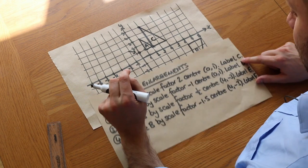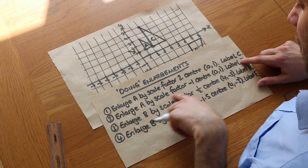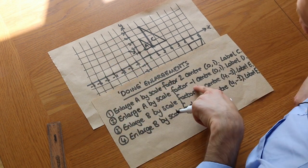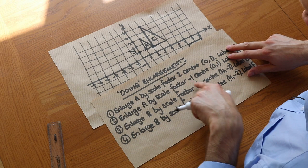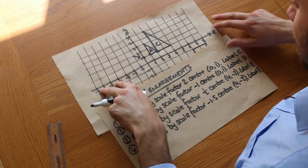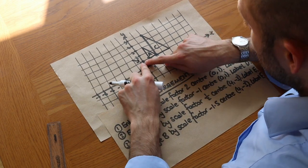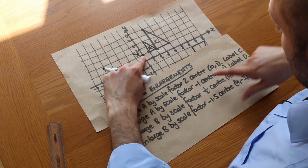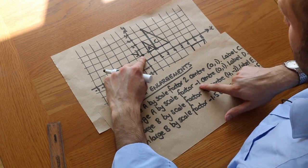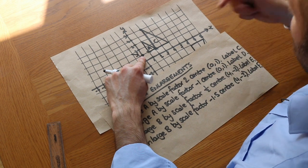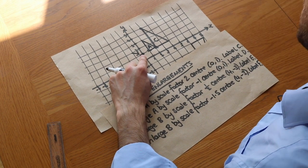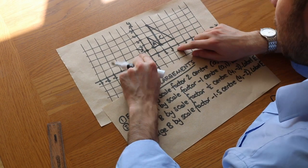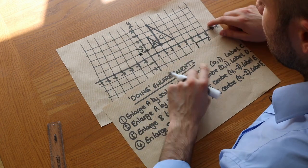Now we want to enlarge A by scale factor minus one about that same centre. We do exactly the same thing — it doesn't make a difference that this is a negative scale factor. We look at the distance to this point: it's one right, and we times the one right by minus one. One times minus one is minus one, so we're going minus one squares right, which is the same as one left. So the one right becomes one left — you can see why it flips over.